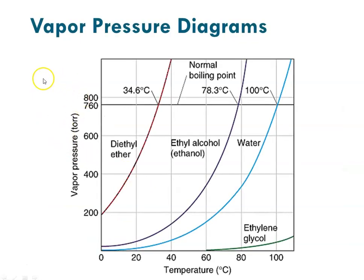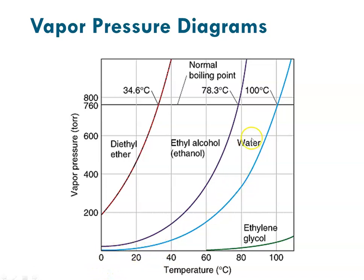Here is another series of vapor pressure diagrams. At standard pressure, 760 mmHg, diethyl ether would boil at 34.6°C — that's where its vapor pressure equals standard atmospheric pressure. Ethyl alcohol (ethanol) at standard pressure has a boiling point of about 78.3°C. Water has a vapor pressure of 760 mmHg at 100°C.